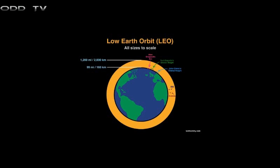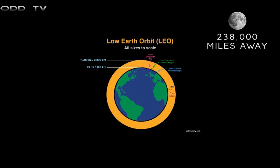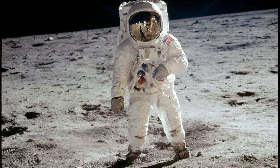On numerous occasions, NASA admits that we can't go beyond low-Earth orbit, which is between 99 miles and 1,200 miles away. The interesting thing is that the moon is said to be 238,000 miles away, which is a difference of 236,800 miles. Are we actually supposed to believe that NASA, whose most famous achievement is putting men on the moon, actually admitted we've never been above low-Earth orbit?